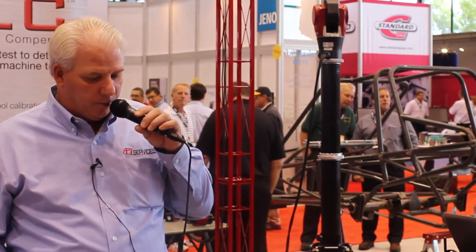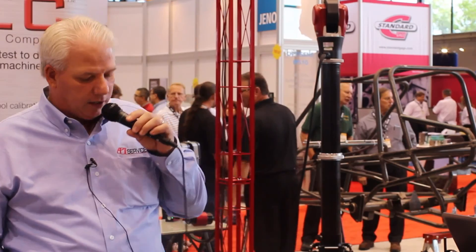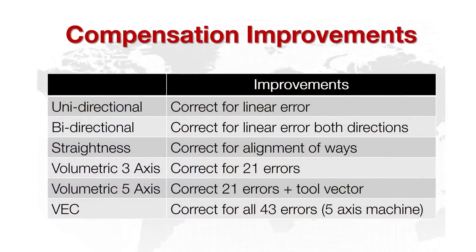To summarize the improvement you get from each calibration solution: unidirectional corrects only the linear in one direction; bidirectional corrects both directions of error; straightness corrects any misalignment of the ways. Volumetric three-axis corrects for all 21 errors; volumetric five-axis corrects for the 21 errors plus the rotary tool vector; and VEC corrects for all 43 errors.